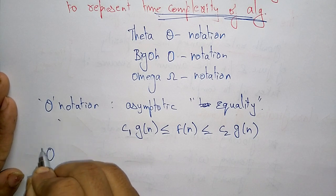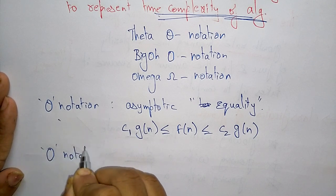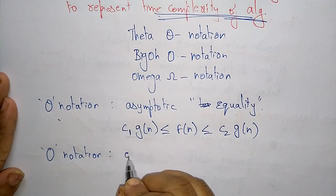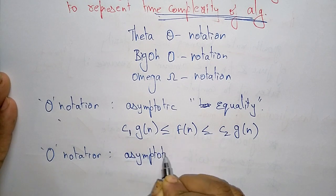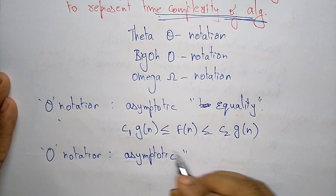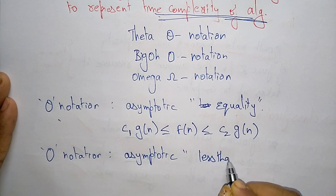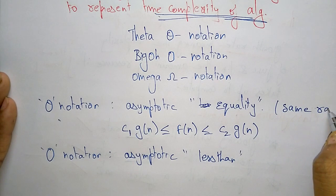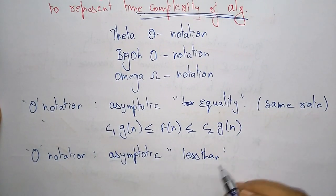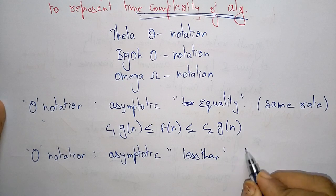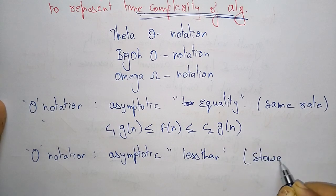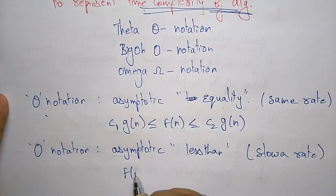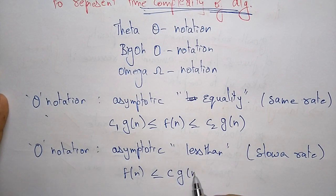Next is Big O notation. For Big O, the asymptotic relationship is less than — meaning the growing rate is a slower rate. Equality represents the same rate, while asymptotic less than means a slower rate. The equation for Big O is: f(n) ≤ c·g(n).